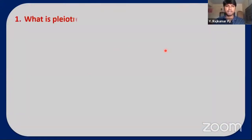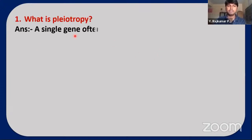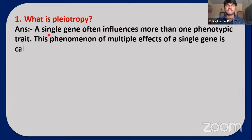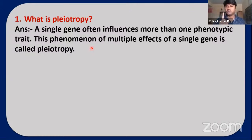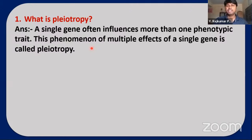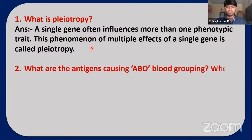Let's start with the two-mark questions. First question: What is pleiotropy? A single gene often influences more than one phenotypic trait. This phenomenon of multiple effects of a single gene is called pleiotropy. Usually one single gene controls only one character, but in pleiotropy a single gene influences more than one phenotypic character or trait.